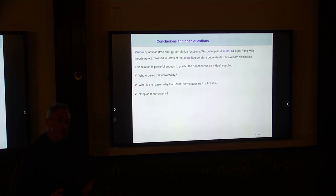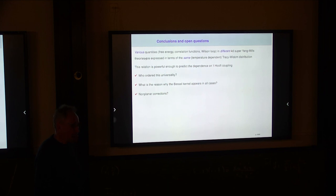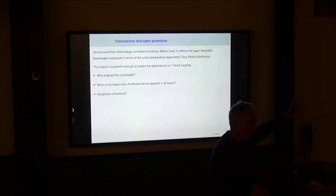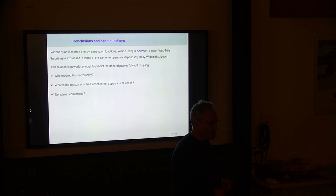Q: You mentioned Tracy-Widom has different asymptotes — soft edge, hard edge. Are all of them relevant here? A: No, only the hard-edge (Bessel) asymptote appears in gauge theories. The soft-edge (Airy) and bulk (sinc) kernels do not appear. So it is the Bessel kernel specifically — a relative of Tracy-Widom — that arises, not the full Tracy-Widom distribution. It's only one piece of the Tracy-Widom story that is realized in gauge theory.